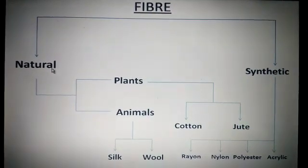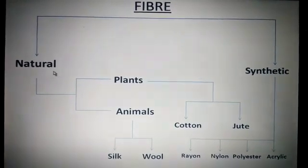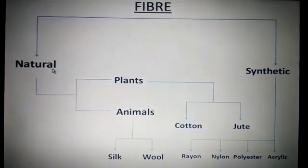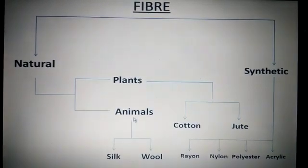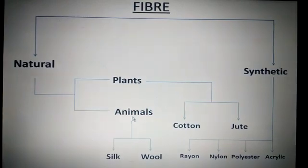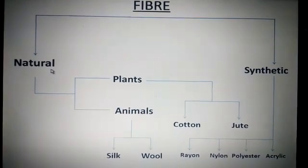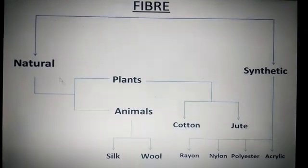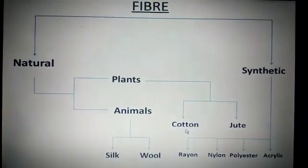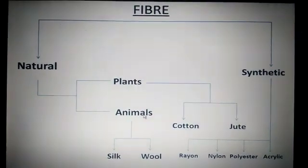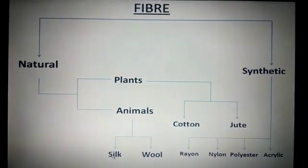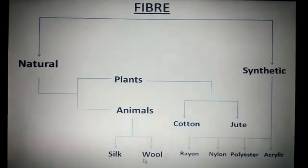Natural fiber — just recall it — what are natural fibers? Fibers which are obtained from plants and animals are known as natural fibers. From plants, we can take two examples: cotton and jute. From animals, we can take an example of silk and wool.